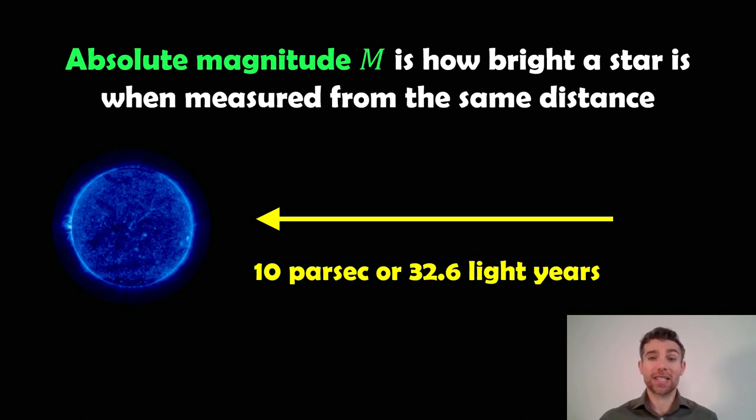Because each star is different, different sizes, different luminosities, different brightnesses, they're going to have a different absolute magnitude. So if we know what the absolute magnitude is, we can work out how far away it is if we know how bright it appears to us.